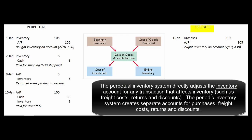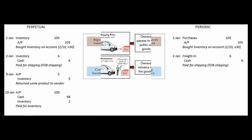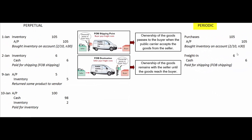Now let's look at the same series of transactions but assume we use the periodic inventory system. When we buy stuff, we buy it into an account called purchases instead of inventory. If the terms are FOB shipping point, that means we're responsible for the shipping, but instead of debiting our inventory account, we debit a separate account called freight in.